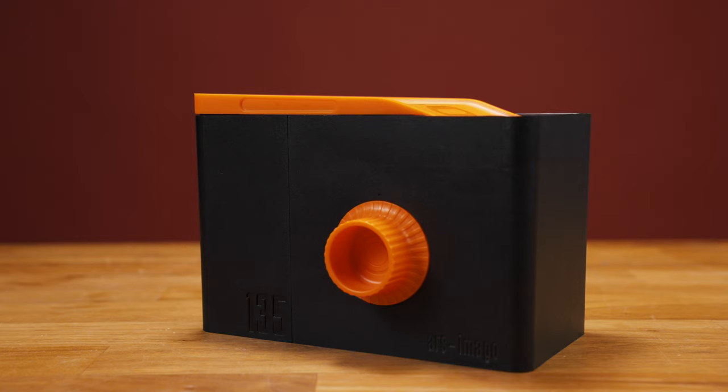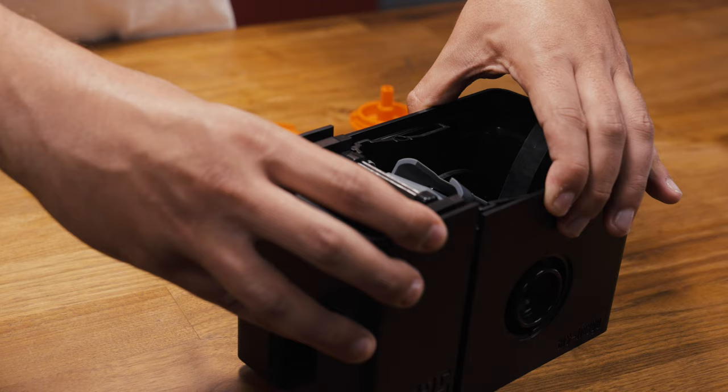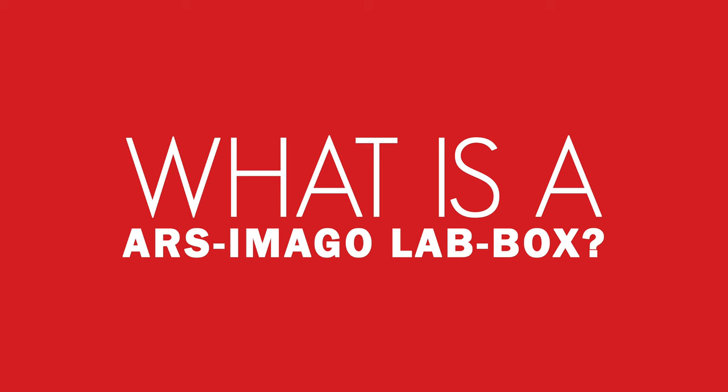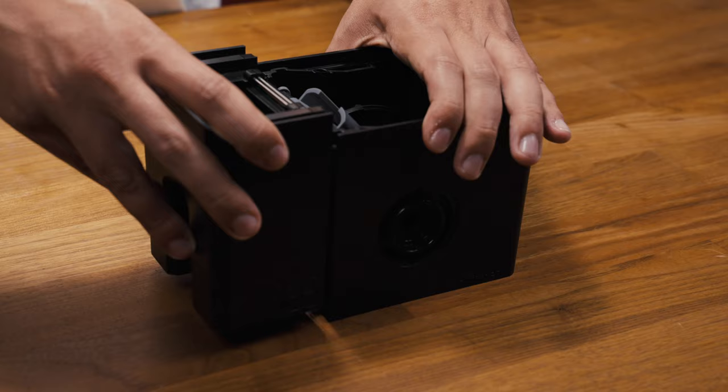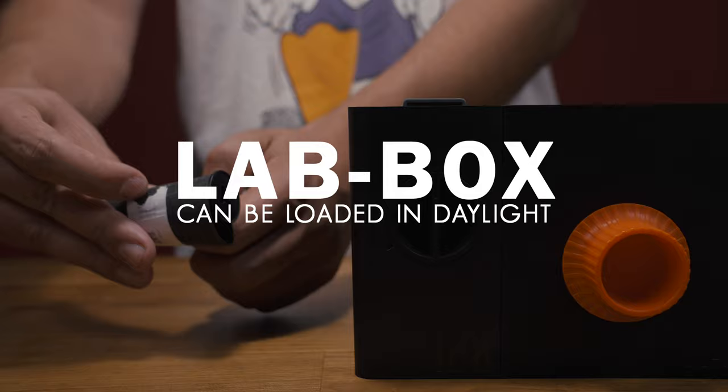The LabBox is a multi-format, modular, daylight loading film processing tank. That's quite the laundry list, so let's break that down one by one. The LabBox is capable of processing both 135 and 120 medium format film. It uses modules that connect to each other to form the complete tank. And last but not least, in addition to being able to process the film in daylight, the LabBox is the only modern processing tank on the market that can be loaded in daylight.